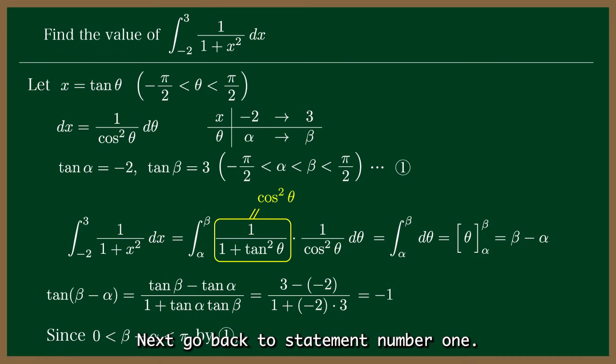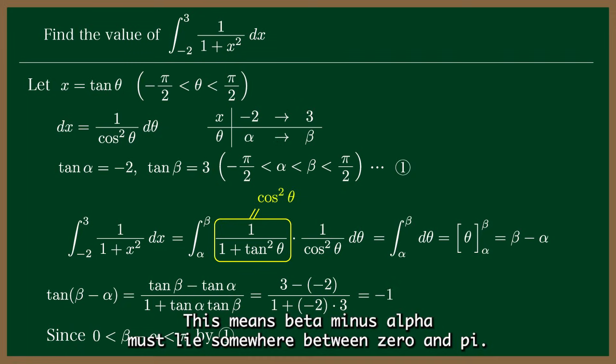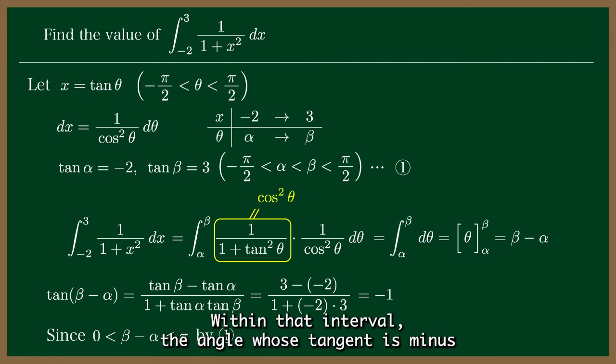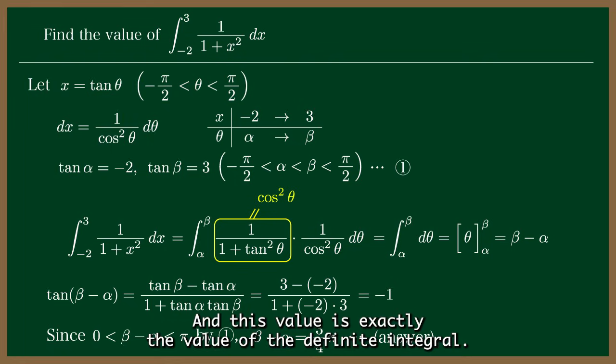Next, go back to statement number 1. Alpha and beta are both strictly between minus 1 half pi and plus 1 half pi. So their difference is positive and less than pi. This means beta minus alpha must lie somewhere between 0 and pi. Within that interval, the angle whose tangent is minus 1 is uniquely determined. It must be 3 fourths pi. Therefore, beta minus alpha equals 3 fourths pi. And this value is exactly the value of the definite integral.